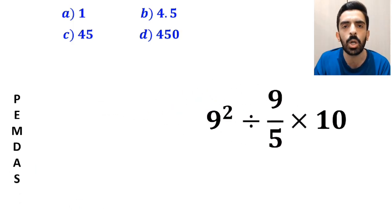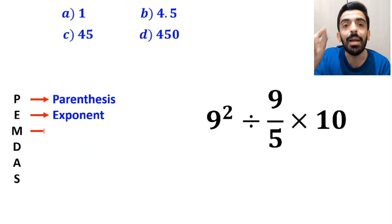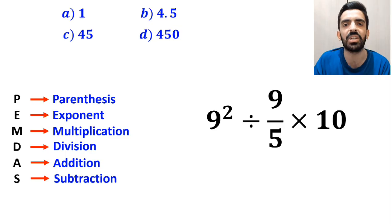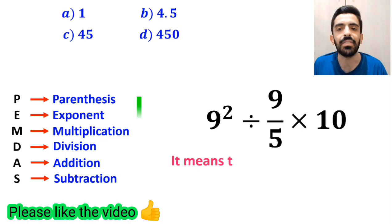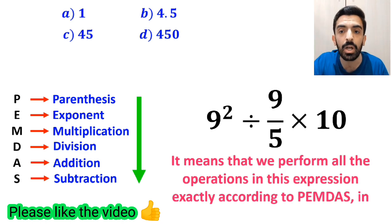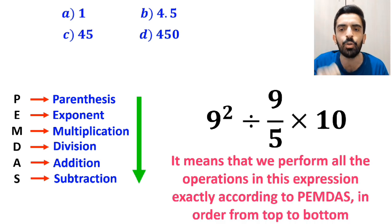So in this rule, P stands for parentheses, E stands for exponent, M stands for multiplication, D stands for division, A stands for addition, and S stands for subtraction. It means that we have to perform all the operations in this expression exactly according to the PEMDAS rule in order from top to bottom.